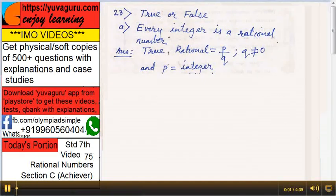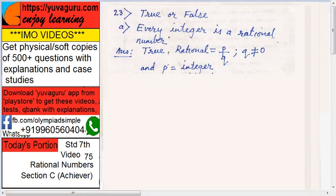Hi friends, welcome to IMO videos. Standard 7th, video number 75, Rational Numbers Section C Achiever. Let's start.